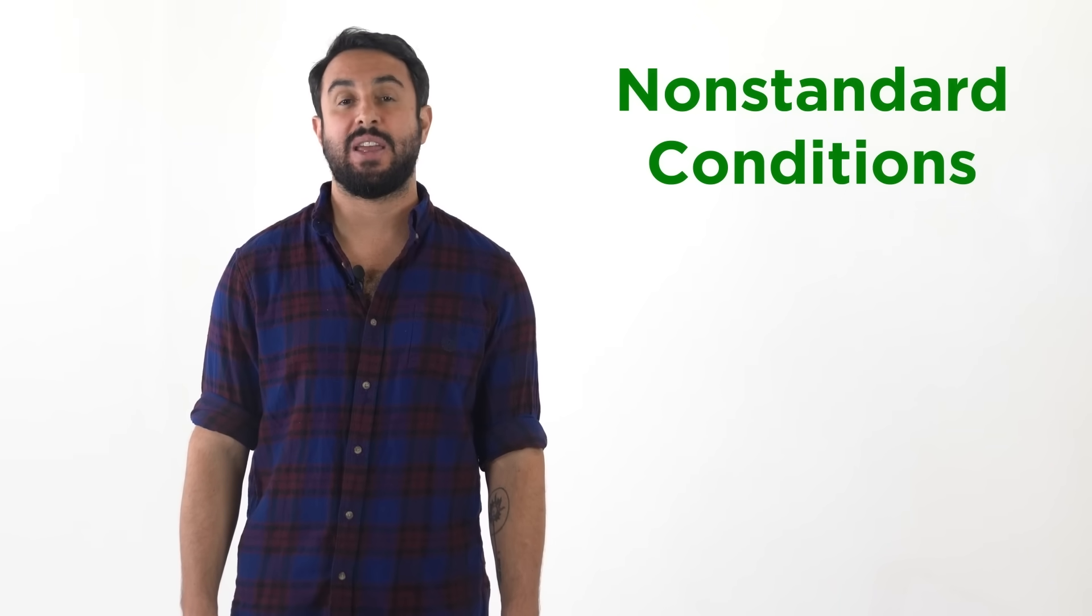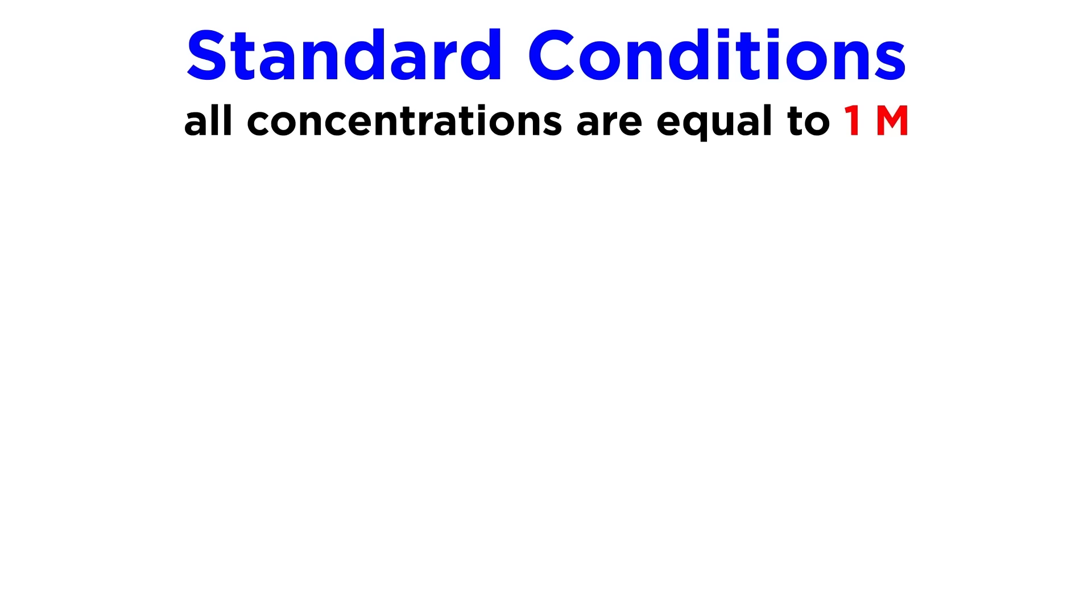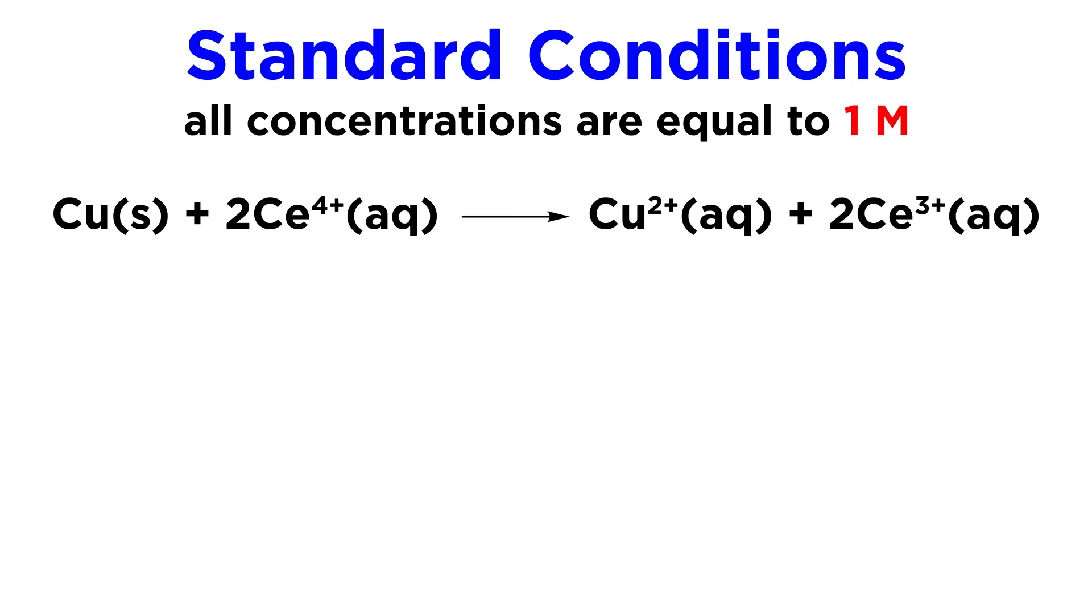So let's look at how we can do this. Under standard conditions, all the concentrations in the cell are 1 molar. Take for example this cell with copper and cerium. Under standard conditions, it has a cell potential of 1.36 volts.